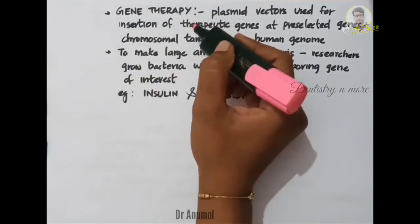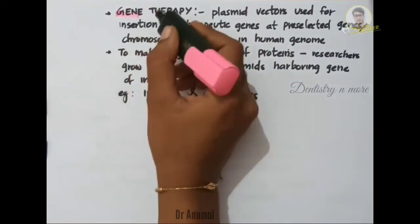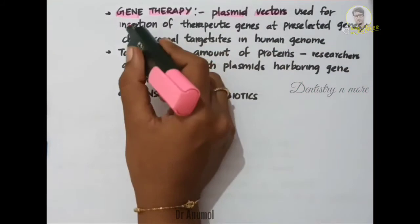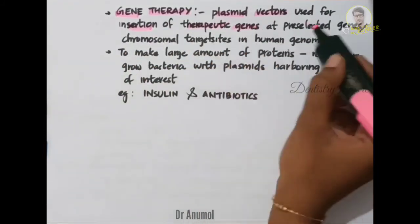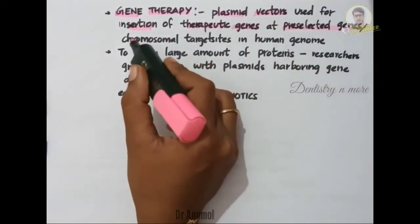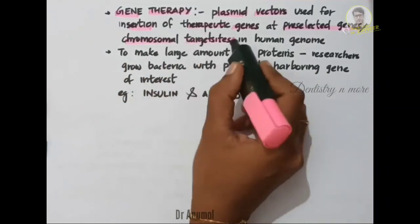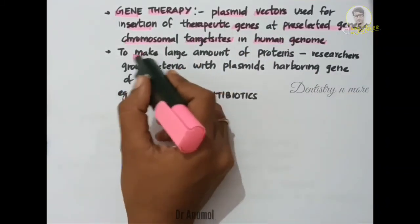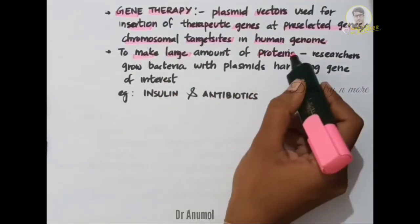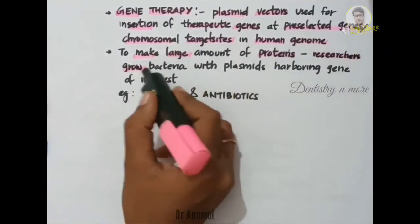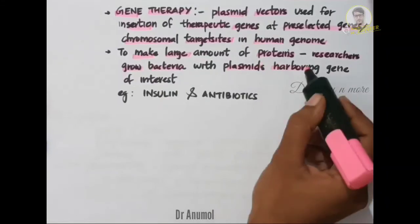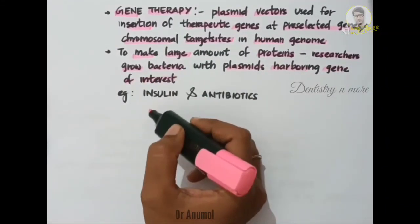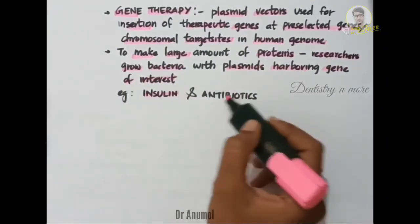Their next use is in gene therapy. Plasmid vectors are used for insertion of therapeutic genes at pre-selected chromosomal target sites in the human genome. Another function is to make large amounts of proteins — researchers grow bacteria with plasmids harboring the gene of interest, for example for manufacturing insulin, antibiotics, etc.